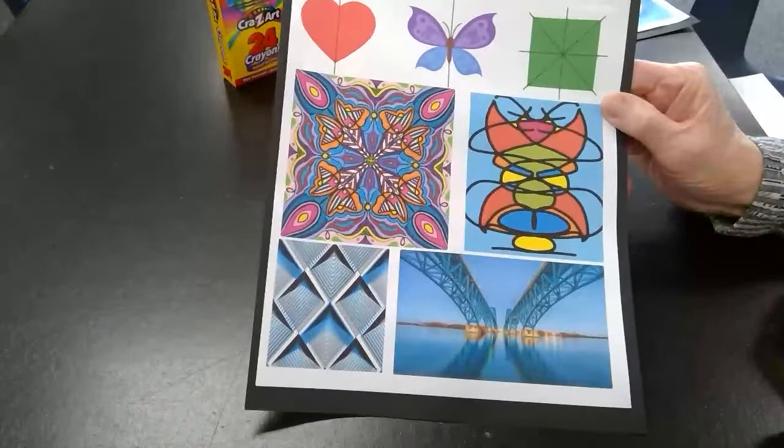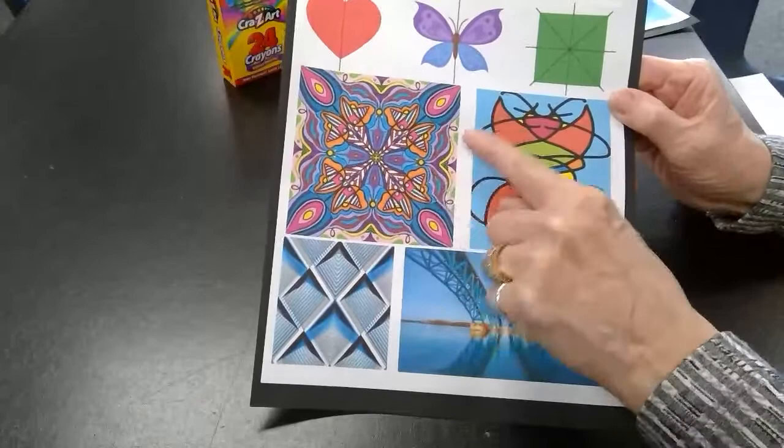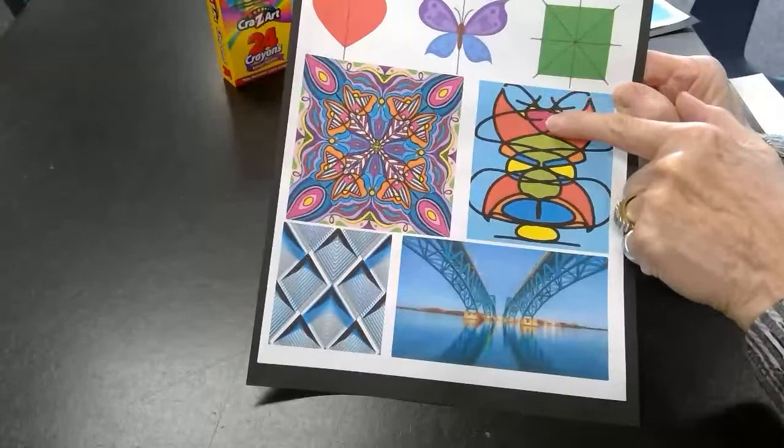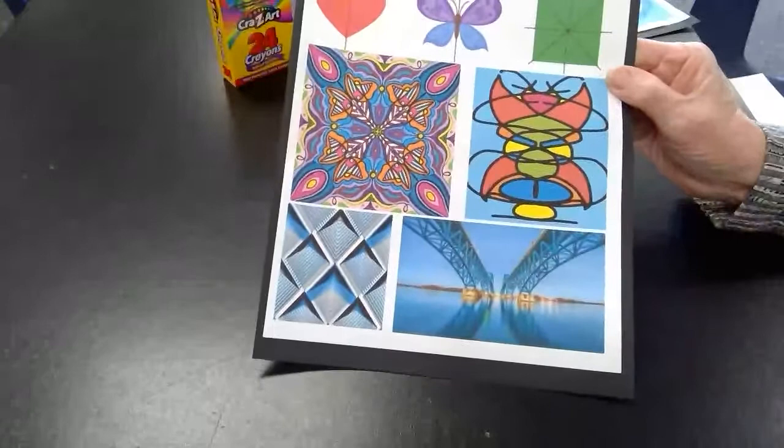This one right here is symmetrical from one side to the other, or from one corner to the other. This one, if you had the line of symmetry, it would go right down the center. If you folded this side over to that one, it would be a perfect match.